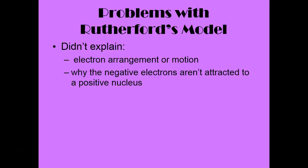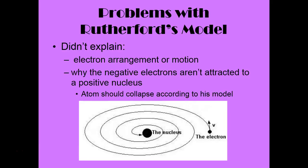Rutherford's model didn't explain the way that electrons moved around the nucleus of an atom. We know from physics that electrons, being negatively charged, should be attracted to the nucleus, which is positively charged. So the question was: why does the electron not just go spiraling into the nucleus? There wasn't really a good explanation for this or how the electron was moving.